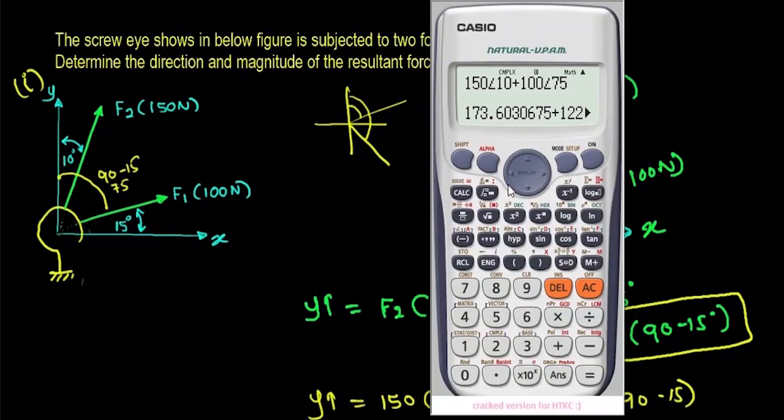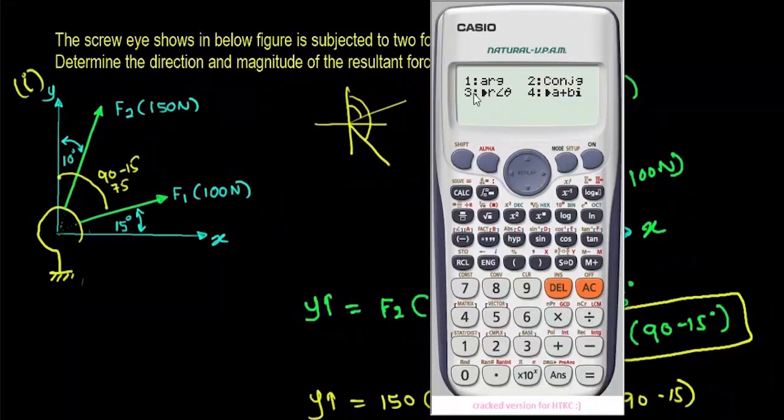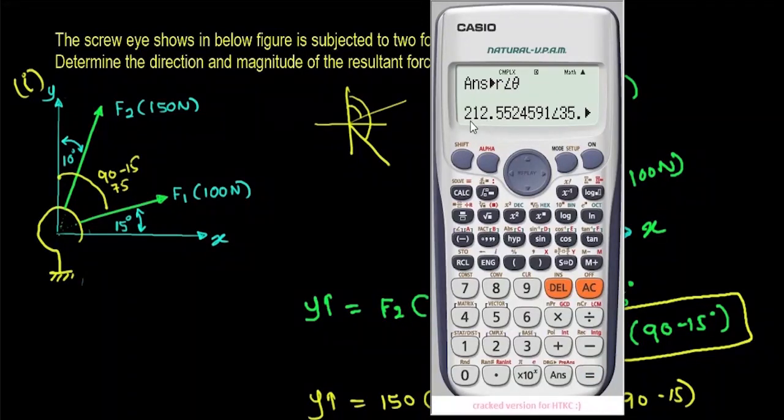I'm going to find out the answer in polar form. You just have to press shift and then the complex button, and you have R theta format in the third selection. Press 3 and then press equal button again. Now you can see your final answer in terms of polar form.